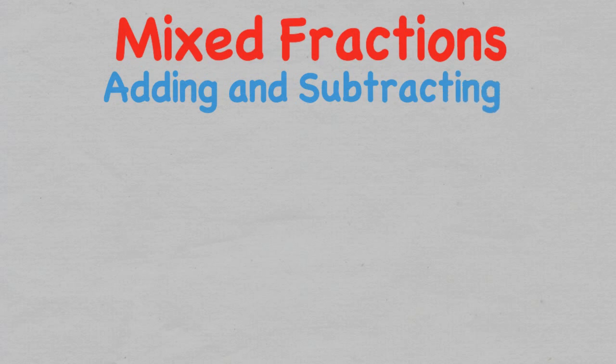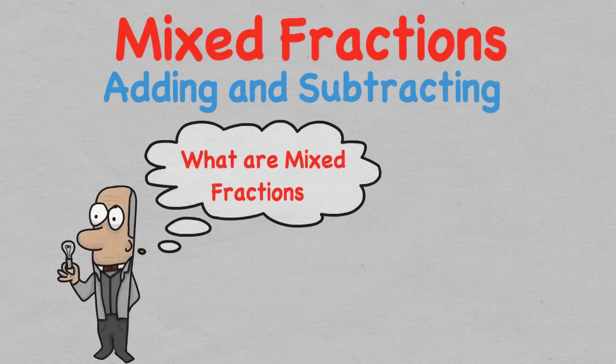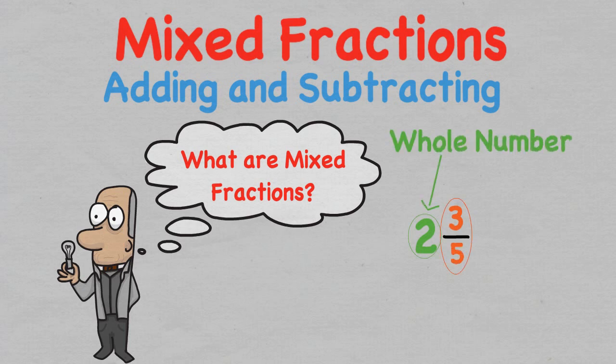Today we are back looking at fractions — more importantly, the steps involved in adding and subtracting mixed fractions. A mixed fraction is a whole number and a fraction combined into one mixed number. In the previous video we discussed how to add and subtract proper fractions using three easy steps: one, making sure the fractions were alike; two, adding the numerators together but not the denominators; and three, simplifying the fraction if possible.